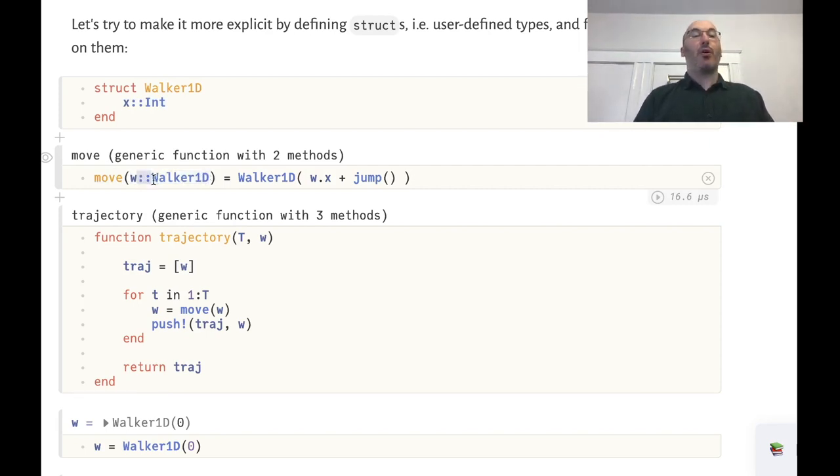So again we use this :: type annotation operator to specify that this version of the move function should only operate on objects of type Walker1d which is the type we've just defined. How do we move a Walker1d? We're actually going to create a new Walker1d object with the new position.